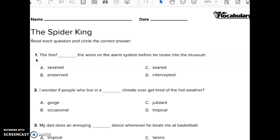Vocabulary Quiz 6.14. The thief blanked the wires on the alarm system before he broke into the museum. A: Severed. B: Preserved. C: Sword. D: Intercepted.